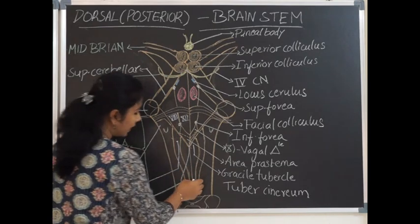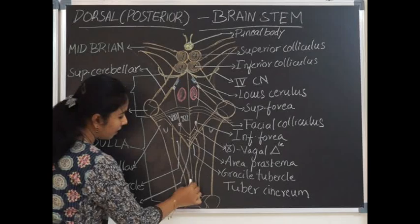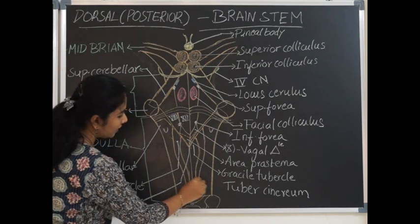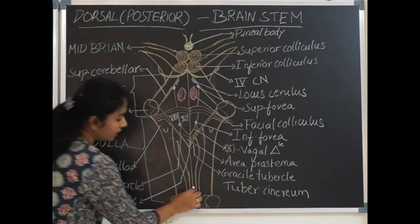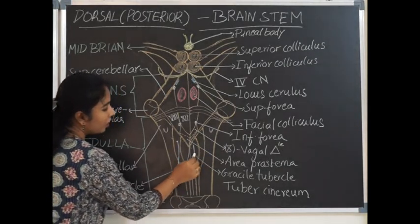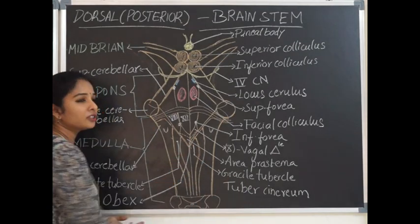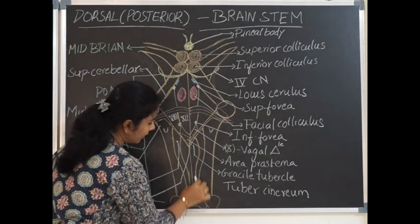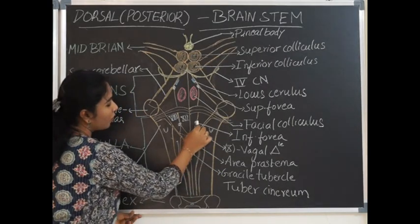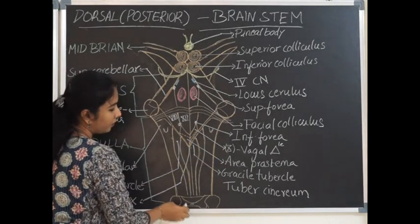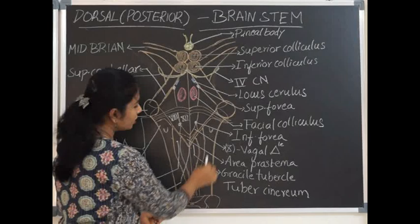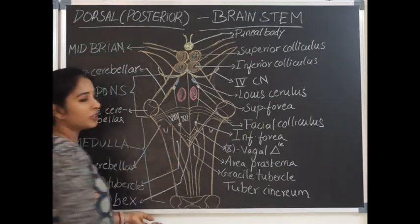On either side of the posterior median sulcus, there are three elevations — three tracts running upward. These are the fasciculus gracilis, fasciculus cuneatus, and the lateral-most is the inferior cerebellar peduncle. As the fasciculus gracilis raises upward, it ends up forming an elevation called the gracile tubercle, deep to which is the nucleus gracilis. Lateral to this, the fasciculus cuneatus also ends up forming an elevation called the cuneate tubercle, deep to which is the cuneate nucleus. The lateral-most elevation is the inferior cerebellar peduncle, which connects to the cerebellum.